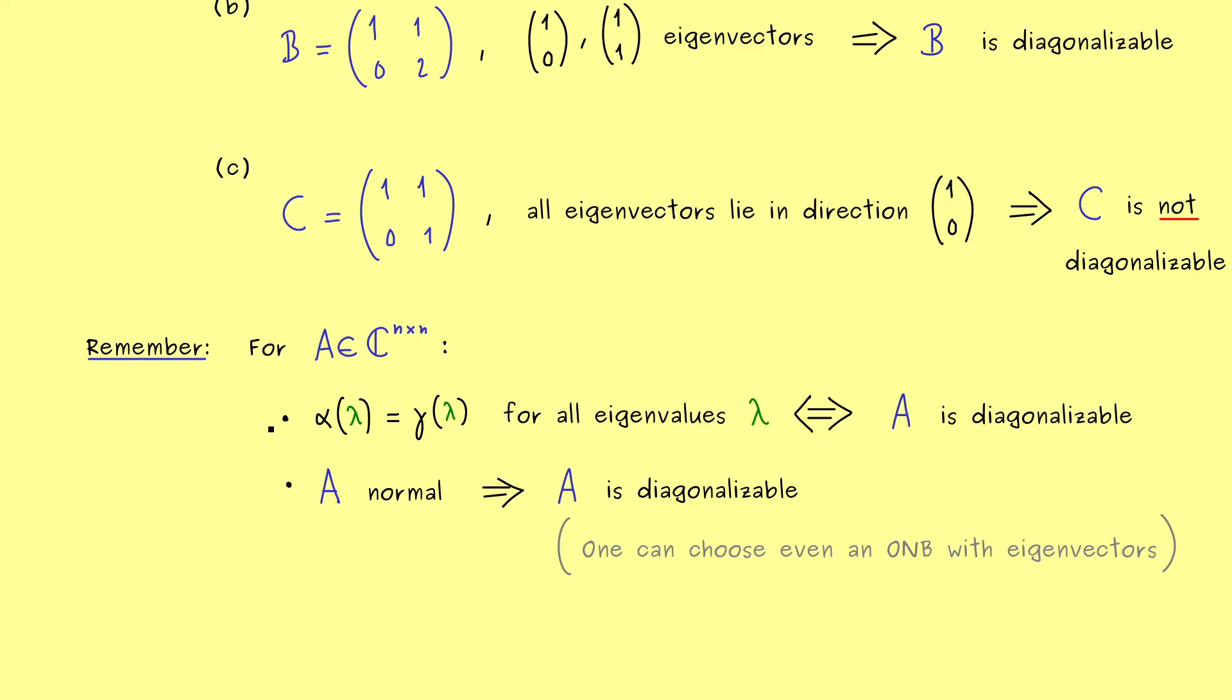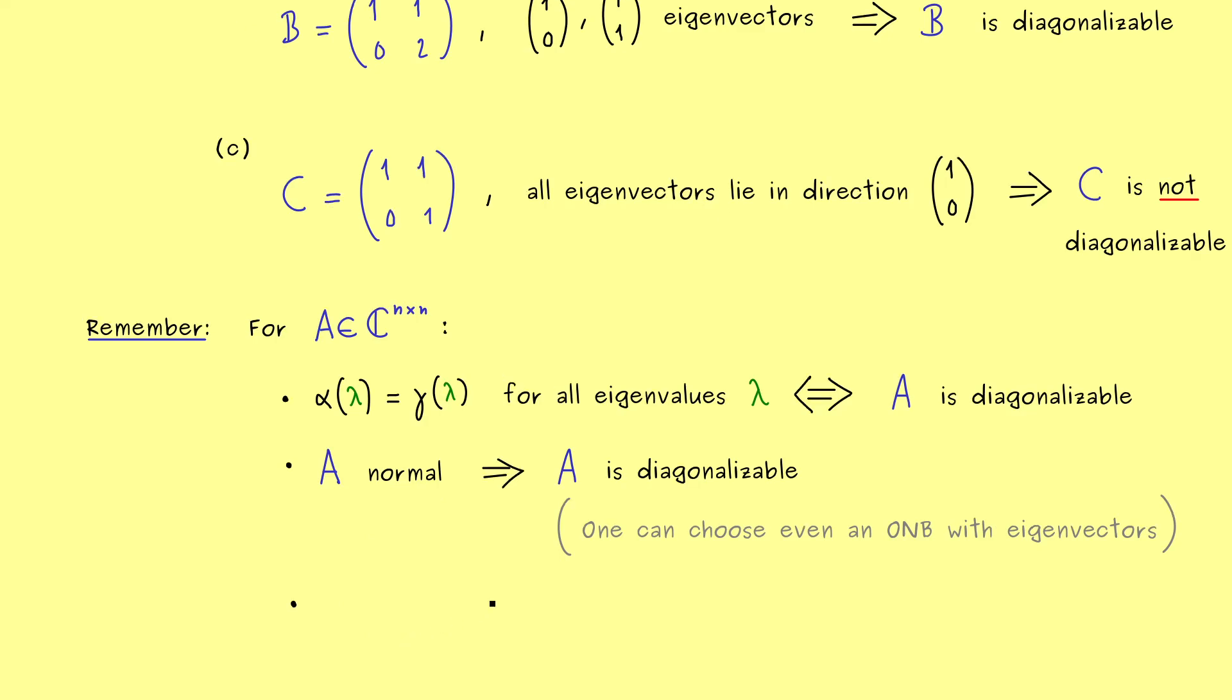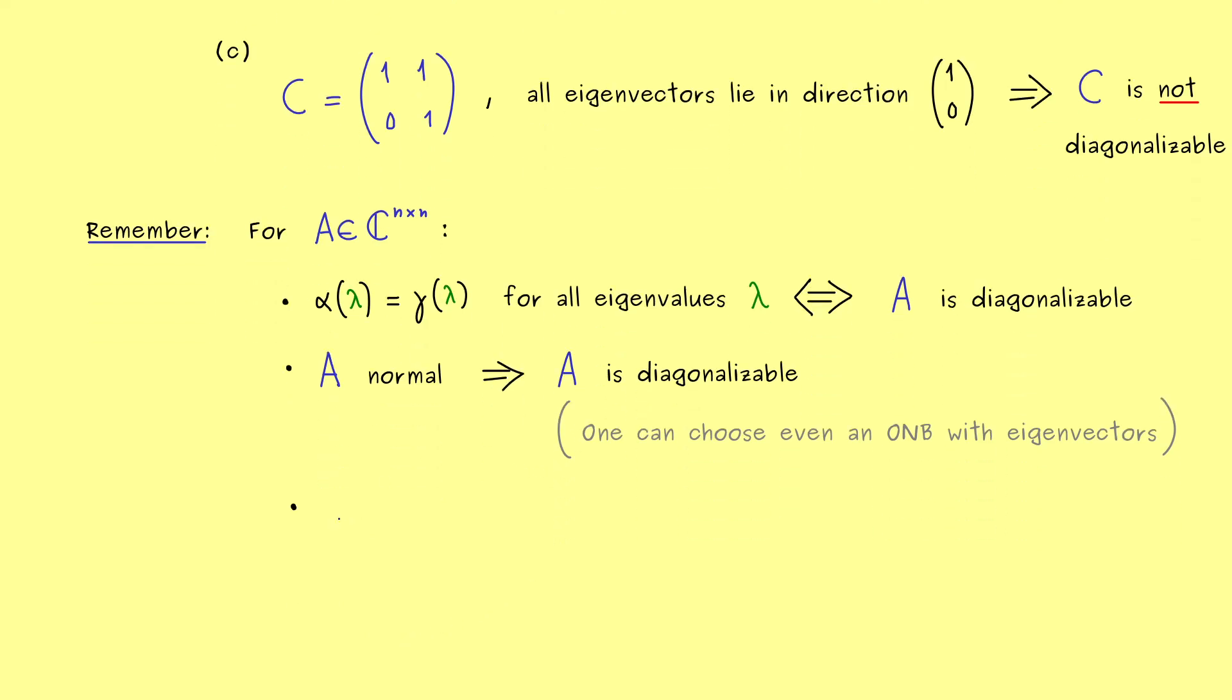Indeed, in this case one knows even more. Namely, one can choose an ONB from the eigenvectors. This is a very special basis. It is a so-called orthonormal basis. It means that with respect to the standard inner product, the basis vectors are orthogonal to each other and normalized. So this is a great thing, which is in general not possible, but for normal matrices it's always possible. So you could say, normal matrices are very powerful in this sense. However, the proof of this fact I will shift to another video.